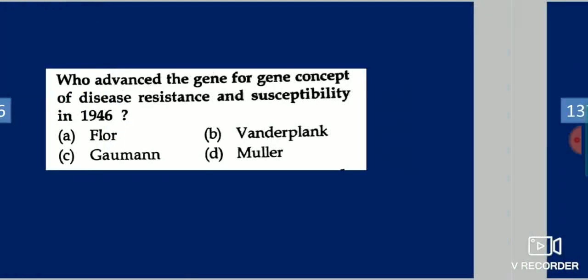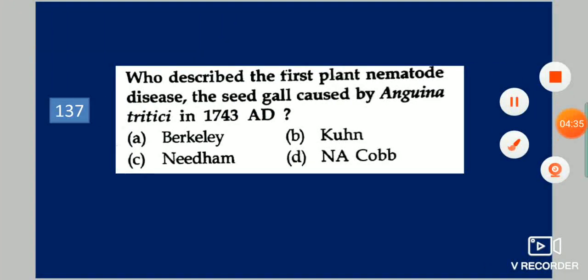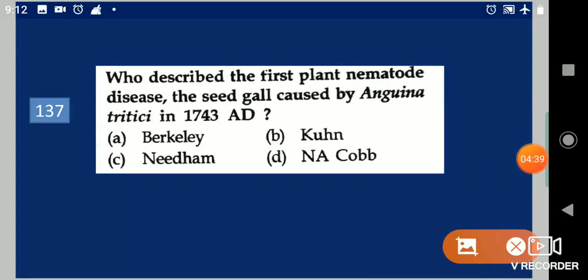Next question: Who described the first plant nematode disease, the seed gall caused by Anguina tritici in 1743 AD? Your options are: Bartle, Coon, Needham, N.A. Cobb. Your answer is Needham.